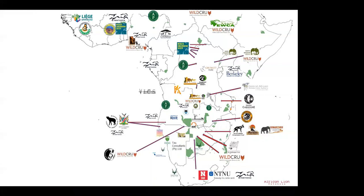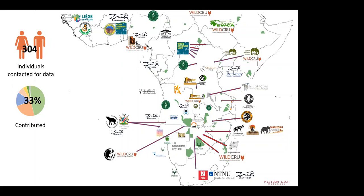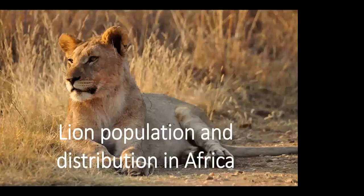This is just a sneak preview of what our distribution map looks like at the moment. In the last year alone, we've contacted 304 individuals from various different institutions to encourage their data to be included in the ALD, of which 33% have included their data. We've also gone through over a hundred different papers and reports. At this point in time, we only have 25% of known lion range included in the ALD — but you can see from the map what a mammoth task this is, and that it really is a conservation community project.